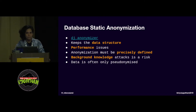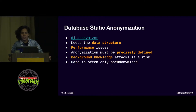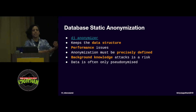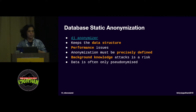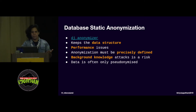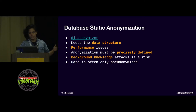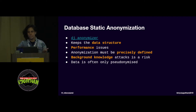Another thing to point out is that anonymization must be precisely defined. I precisely defined what I want to anonymize in the user model. If in the future I forget to anonymize something, I can have a privacy breach. Or if someone has background knowledge about my dataset, they might look through and infer something about my users. That's why this static method is often only pseudonymization, not real anonymization — you have to be careful.